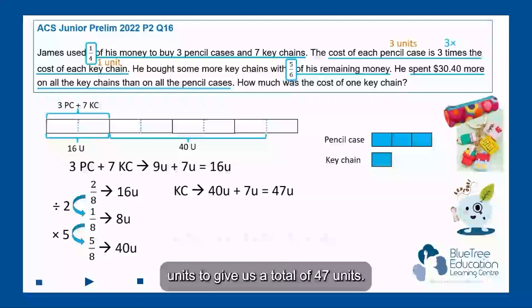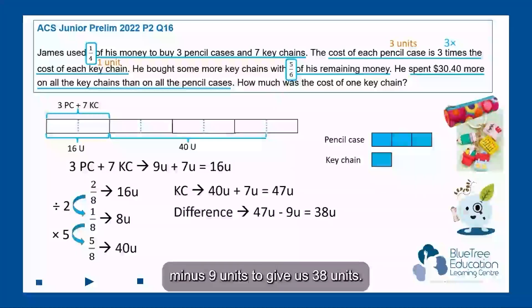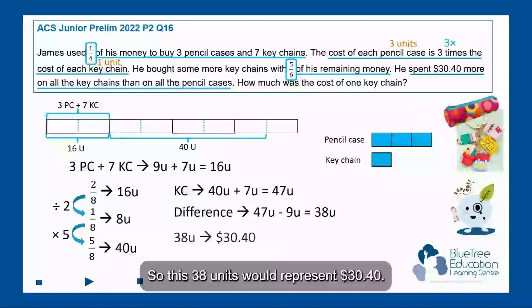All right, and the difference between the keychains and the pencil cases will be 47 units minus 9 units to give us 38 units. So these 38 units would represent $30.40.